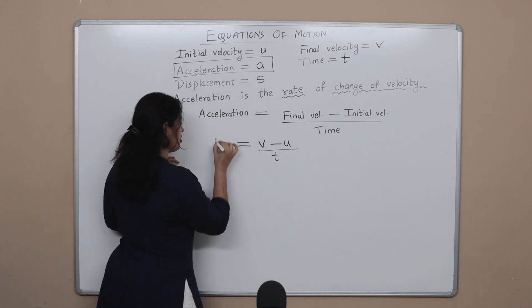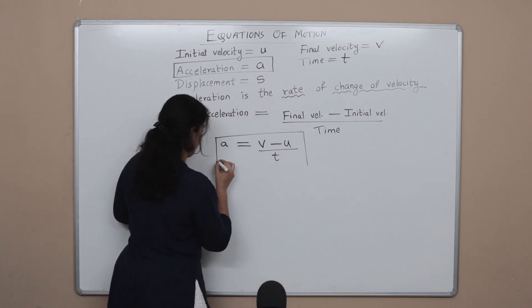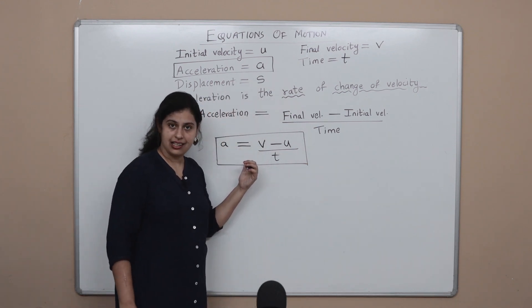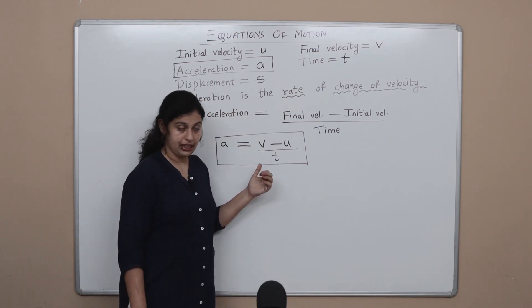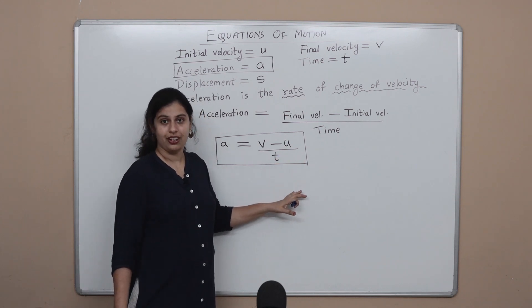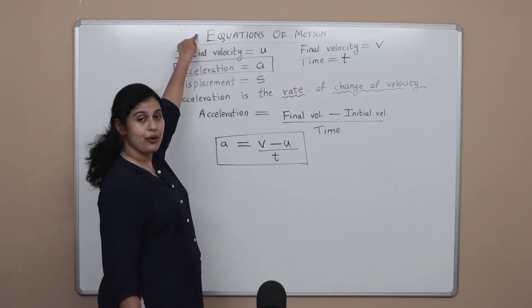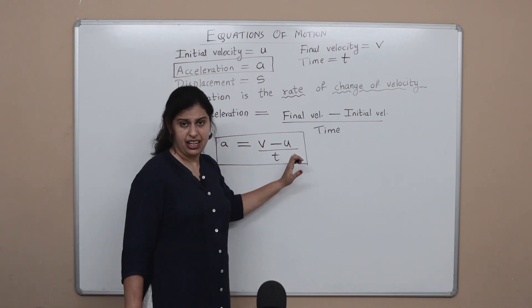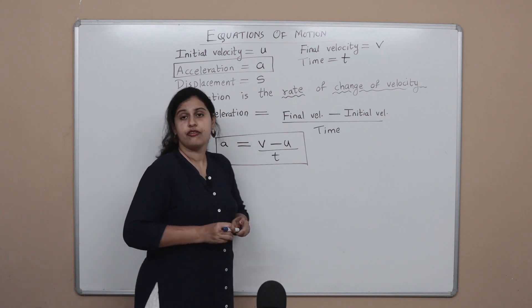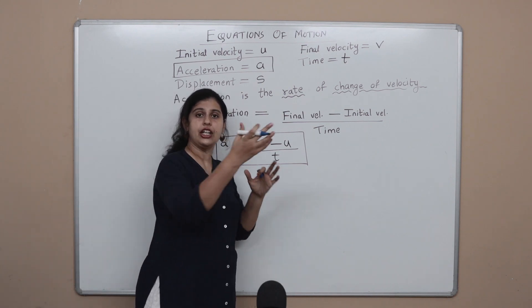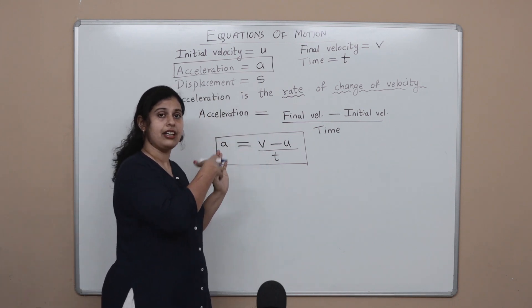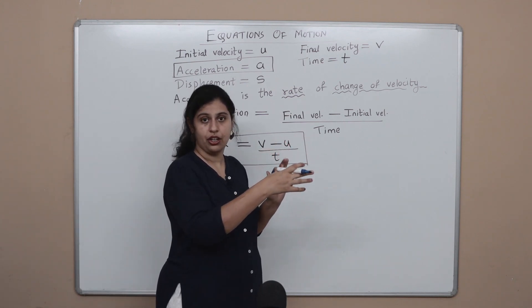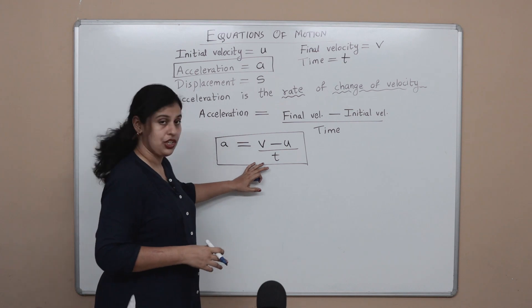Now what do we have here? We have our first formula, the formula which will help us calculate the acceleration of any moving object. But what are we looking for here? We are looking for the equations of motion. We're not very far, we are very close actually. See, in the equations of motion we generally have one term on the left hand side and everything else on the right. Now there we have no terms in the denominator, and that is what we are going to achieve over here.